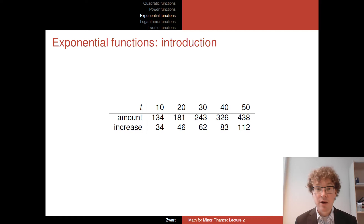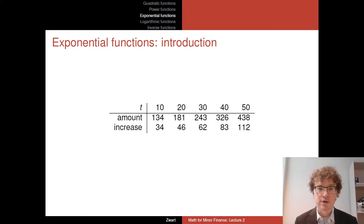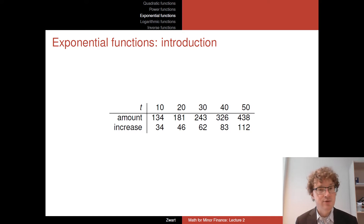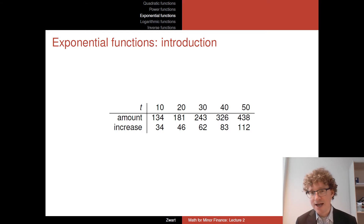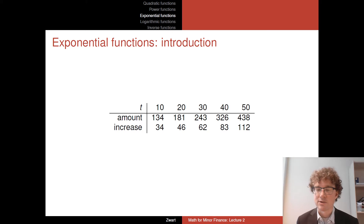Exponential growth means by definition that the amount is growing with a constant factor. In the 3% interest example: starting with 100 euros at time zero, after 10 years we have 134 euros — an increase of 34 euros. After 20 years we have 181 euros — an additional increase of 46. The amounts and the increases keep getting bigger and bigger, growing faster and faster. That's what we typically mean by exponential growth.